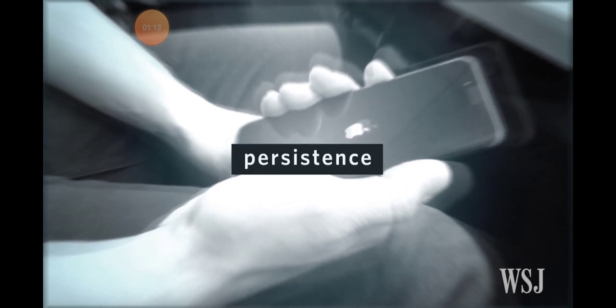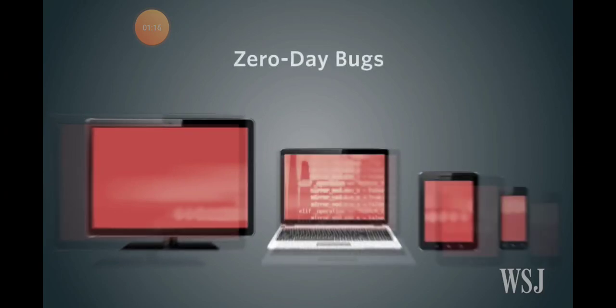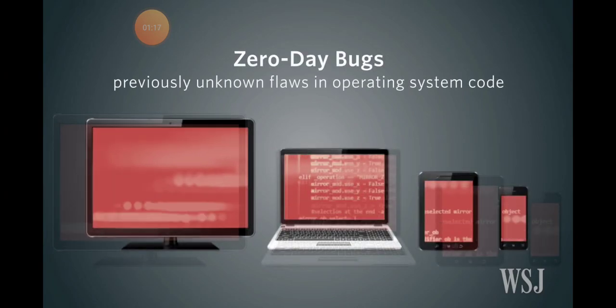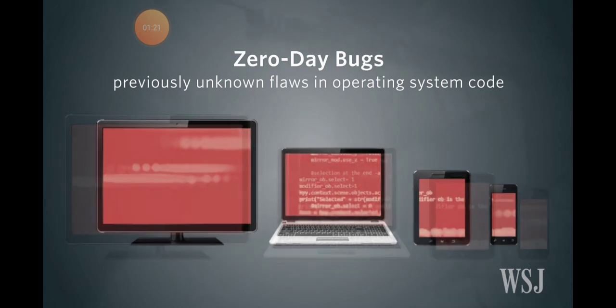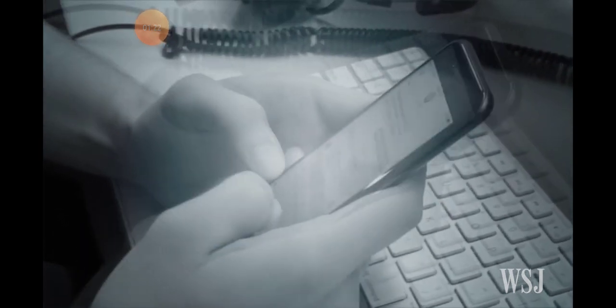To gain access to phones and other devices, the CIA would exploit zero-day bugs, previously unknown flaws in the operating system's code, that they would collect and store.